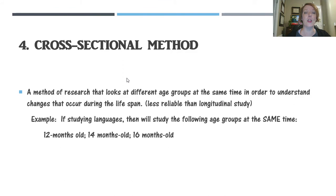The cross-sectional method attempts to take care of some of the problems with a longitudinal method. If you have a research study stretching out over decades, some participants are going to be lost — they may move away, decide they don't want to be in the study, or sometimes they die. In fact, in some of the longest research studies, the researchers themselves have died. So the cross-sectional method takes the same research questions and looks at participants of different ages at the same time — taking slices of different groups.